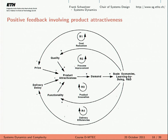Positive feedback loops always have an even number of minuses. Two minuses multiply to produce a plus, so if you have a loop with only an odd number of minuses, that's a negative feedback loop; otherwise it's a positive feedback loop.